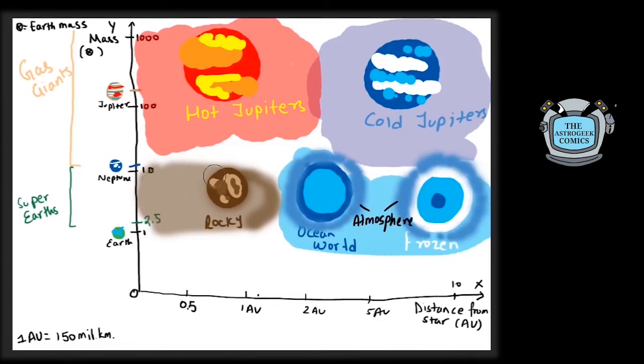Rocky planets, based on their distance from the star, may or may not have an atmosphere. Being close to the star will strip the atmosphere due to radiation.